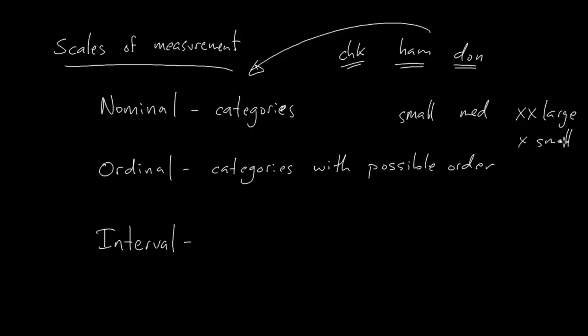So these are not in order, but there is a potential order. For example, medium is bigger than small. Extra, extra large is bigger than medium. Small is bigger than extra small. So there is a built in order to these categories. This would be ordinal data.